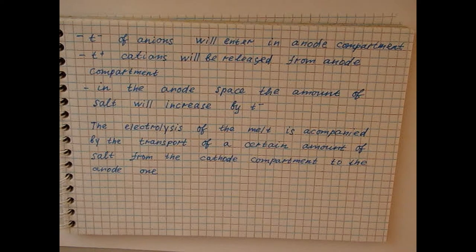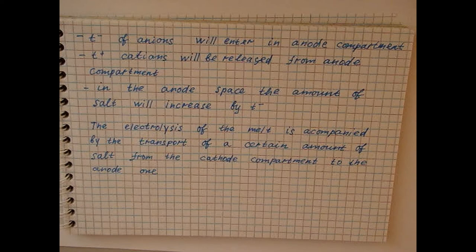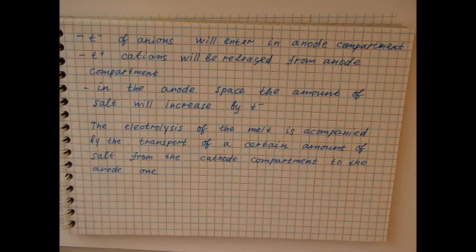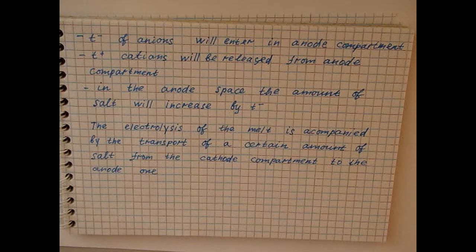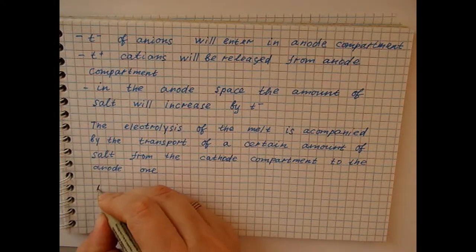Therefore, the anode and cathode compartments are separated by a porous membrane that prevents melt flow under the action of gravitational force. Then, the transport number of the anion can be calculated from the increase in volume of the anode compartment.